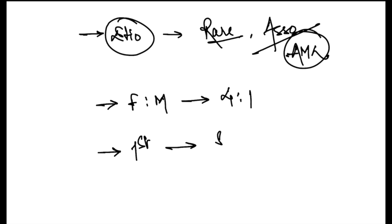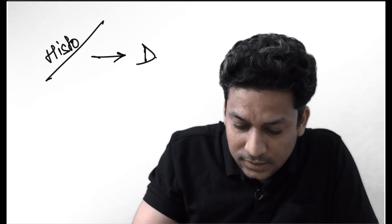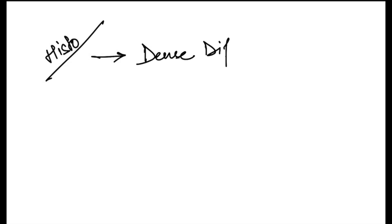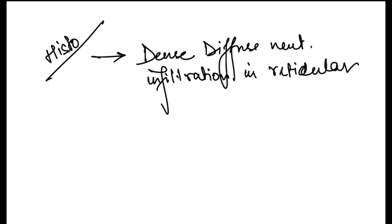In the treatment of this condition, the first-line treatment is systemic corticosteroids like prednisolone. For making the diagnosis, histology is done. As the name itself is suggestive, this is neutrophilic dermatosis, so you will find dense diffuse neutrophilic infiltration in the reticular dermis, that is the deep dermis.